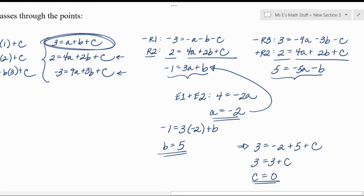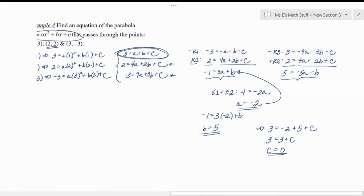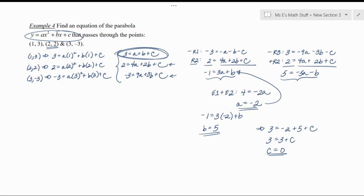There we go. Now we just did a lot of work, but you do want to make sure that you finish the problem out. They wanted to ask you to find the equation of a parabola of that form that passes through those three points. So your final answer would be negative 2x squared plus 5x, and then you could say plus 0 or not. There we go.